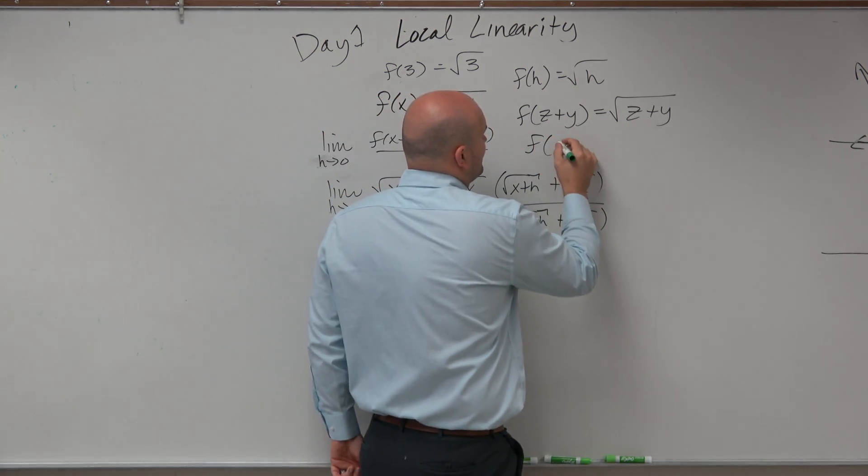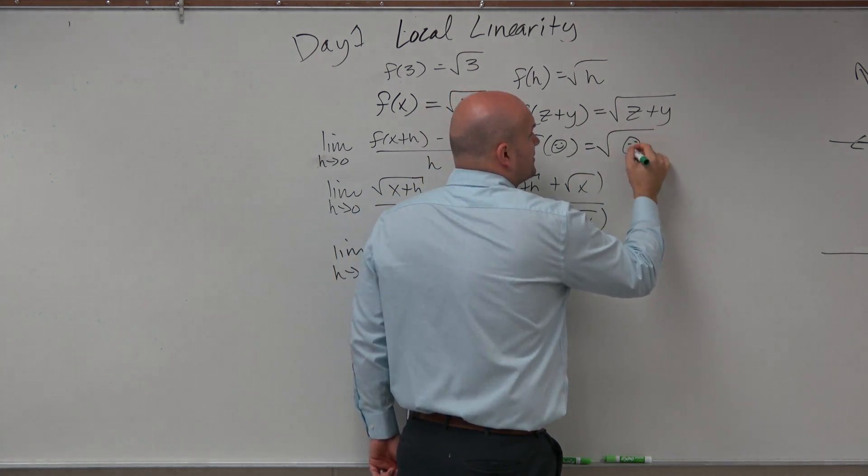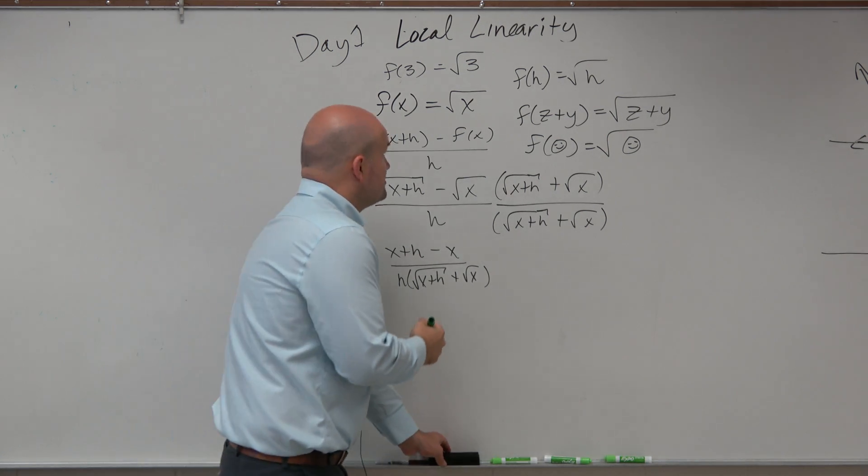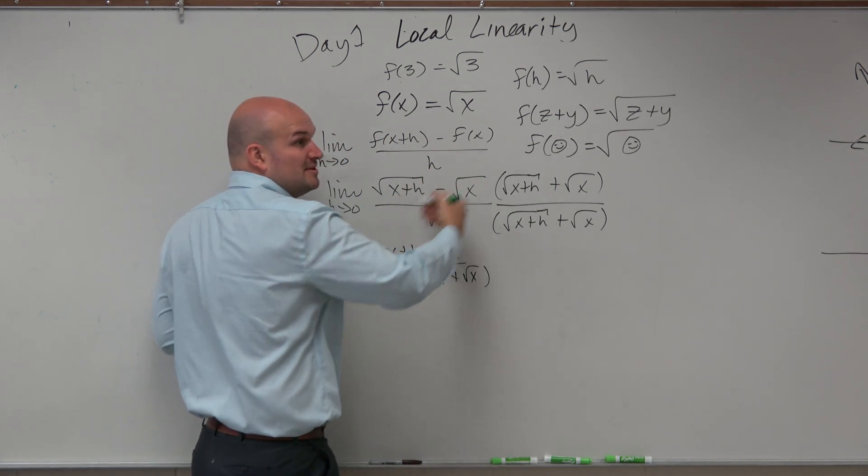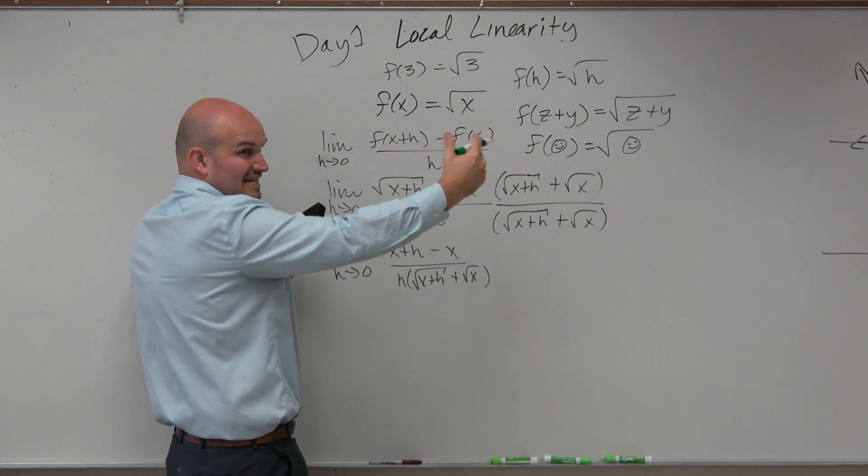OK? So, f of smiley face equals square root of smiley face. Follow the pattern? OK. So we're using the x plus h because, remember, that's that secondary point that we have. And we're now trying to condense that h to be 0.